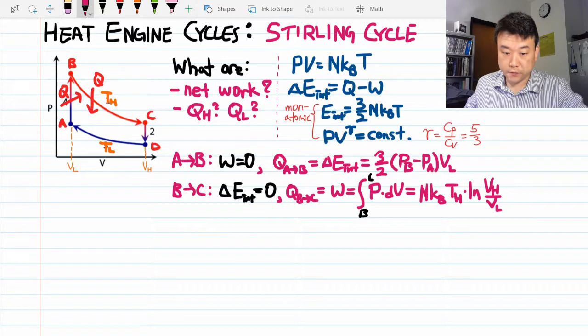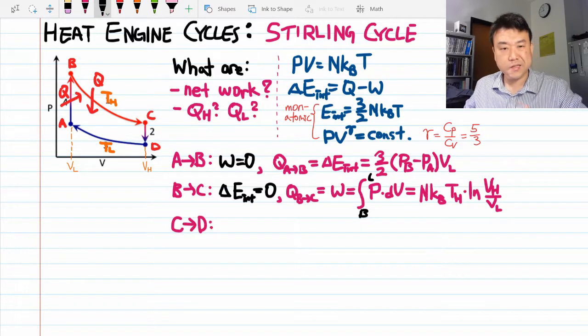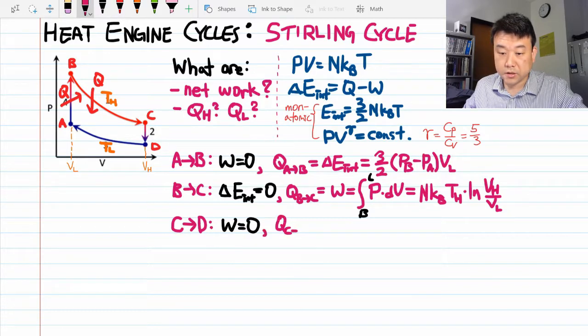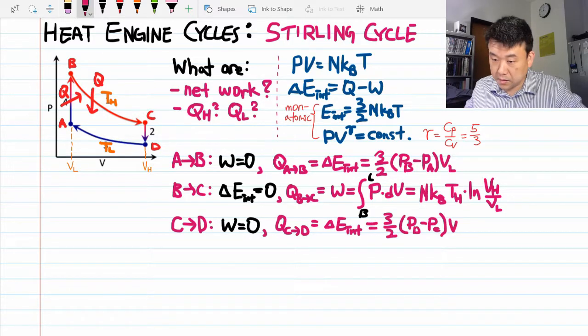Alright, let's keep going. Isochoric cooling from C to D. This is the reverse of A to B so the work done is still zero. And the heat transferred is the change of internal energy which is going to turn out to be negative this time. PD is smaller than PC so this is negative.